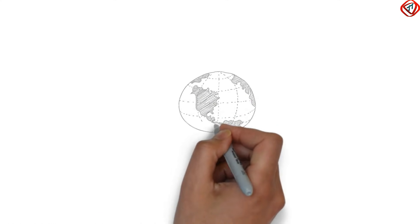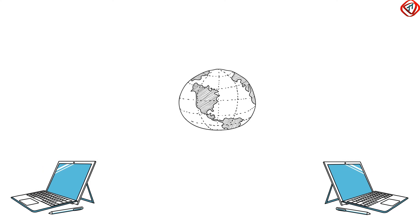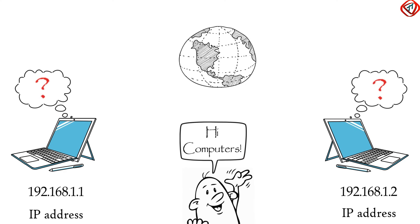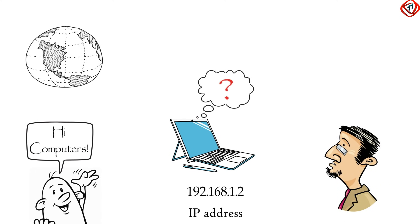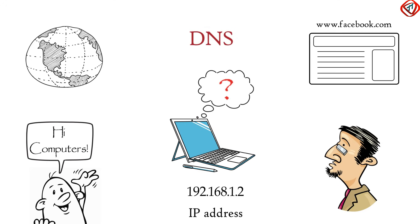In the internet, computers always identify each other with unique numbers called IP addresses. They do not understand human languages. If computers do not understand human languages, how do they load a website when we type its address in the web browser's URL bar? That's the place where DNS comes in.